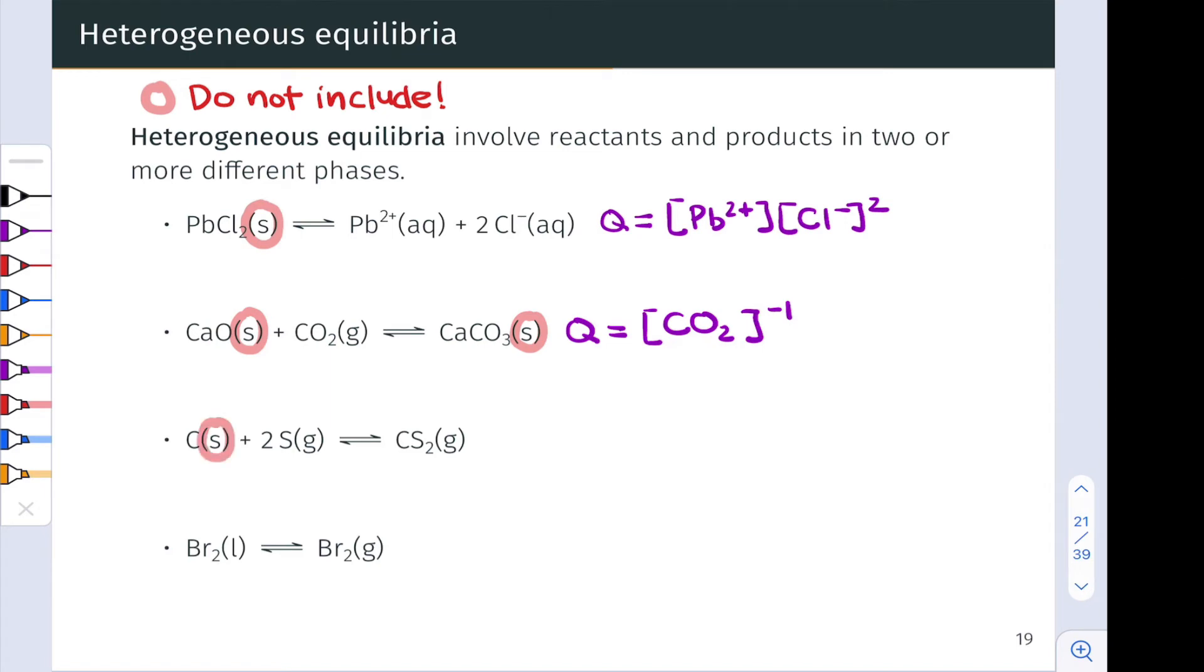In the third case, we have solid carbon reacting with gaseous sulfur, two equivalents, to form gaseous CS2. That solid carbon does not appear in the reaction quotient, so Q is equal to CS2 molarity divided by the molarity of sulfur squared.